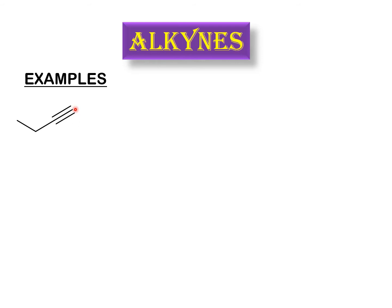You have to mention the position of the triple bond. Starting from the left the triple bond falls at position three, but starting from the right the triple bond is at position one. So you start numbering from the right: one, two, three, four. Because the chain contains four carbon atoms the prefix but- is used, and because it belongs to the alkyne class the name ends with -yne. So it is 1-butyne, or but-1-yne.